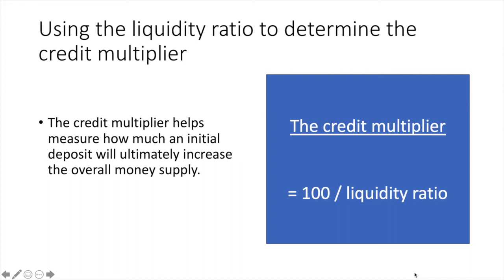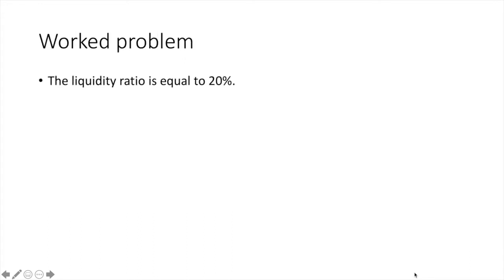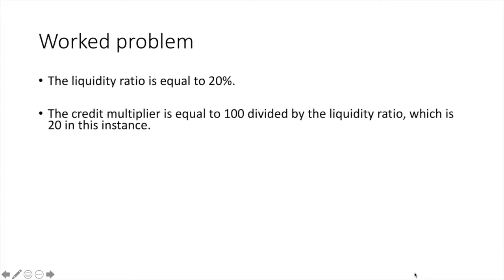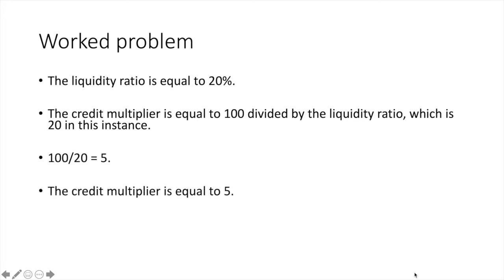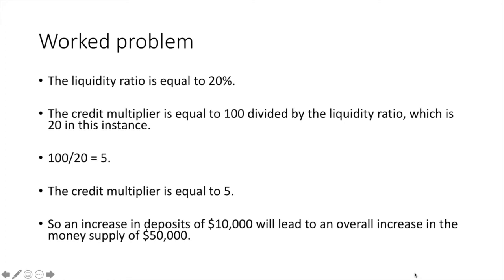Let's look at a worked problem to help us understand better. Assume the liquidity ratio is 20%. The credit multiplier is equal to 100 divided by the liquidity ratio, which is 20 in this instance. 100 divided by 20 equals 5. The credit multiplier is equal to 5, which means an increase in deposits of $10,000 will lead to an overall increase in the money supply of $50,000. That $50,000 is equal to $40,000 in newly created credit and a $10,000 increase in reserves.